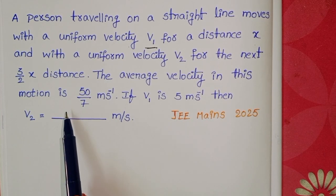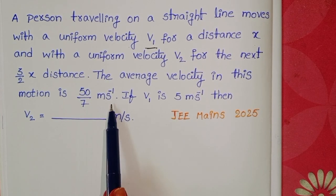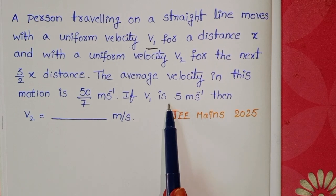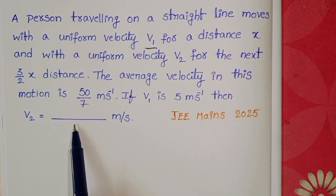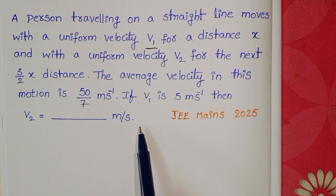The average velocity in this motion is 50 by 7 meter per second. If v1 is 5 meter per second, then the value of v2 is dash meter per second.